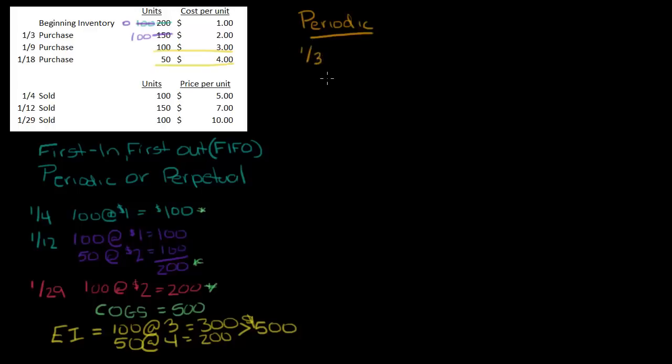I've got my 1-3 purchase on 1-3, and we'll say that these were all on account. So on 1-3, I've got purchases and I've got accounts payable. And we'll set up my debits and my credits. So on 1-3, I've got purchases and accounts payable, and the total amount was 150 times 2, so that's 300, and my accounts payable is 300.